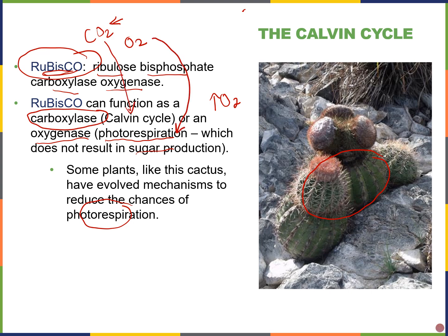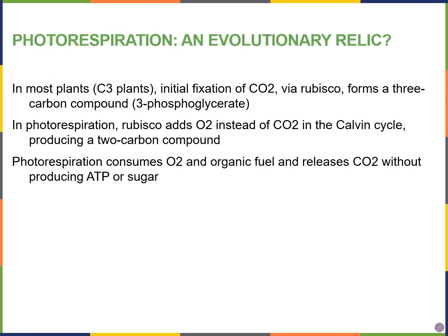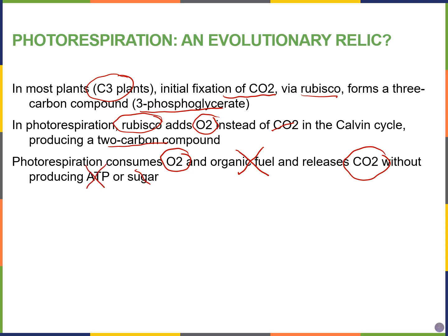Most plants are called C3 plants because when rubisco fixes CO₂, one of the first products formed is 3-phosphoglycerate, a three-carbon compound. In photorespiration, rubisco binds to oxygen instead of CO₂, producing a two-carbon compound, which uses oxygen and sugars and ATP while releasing CO₂ and not producing more ATP or sugar for the plant. For C3 plants, photorespiration is a wasteful reaction.